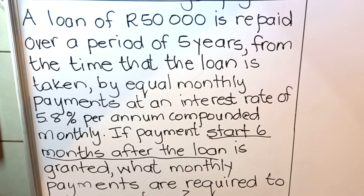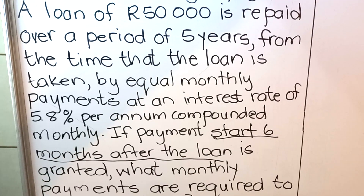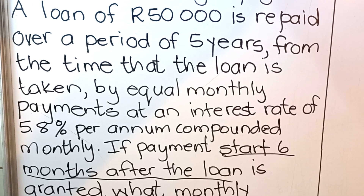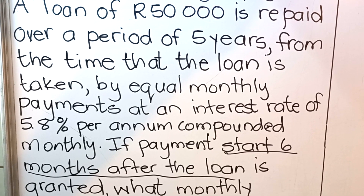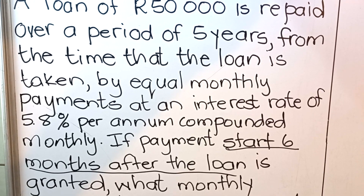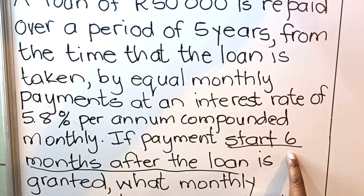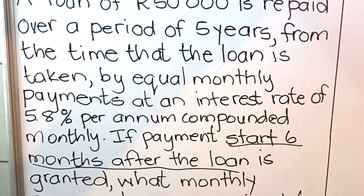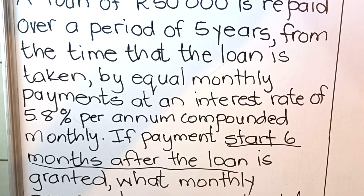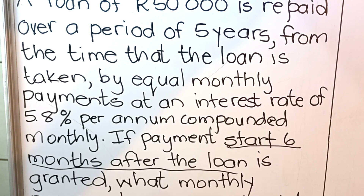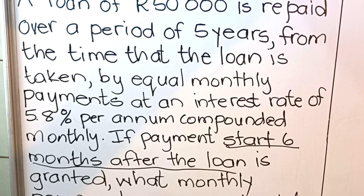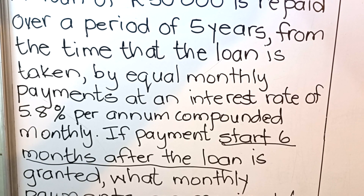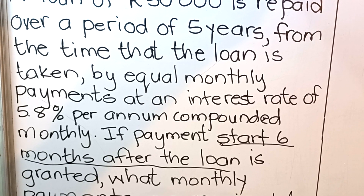So this six months later — after the loan starts, six months later — means you're going to pay interest for five months. Since you're supposed to pay one month later, when they say six months, you say six minus one, which gives you five. So you're going to pay interest for five months. Go to your formula sheet and use the Grade 11 formula.